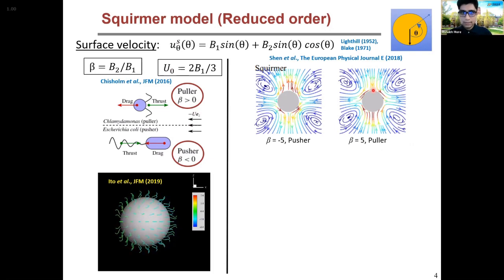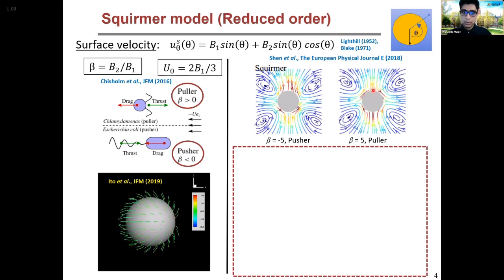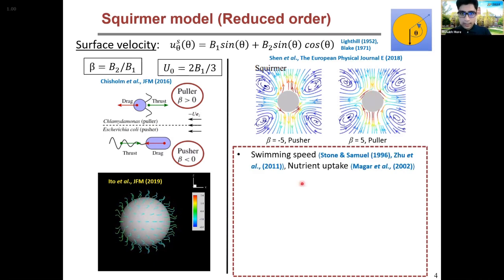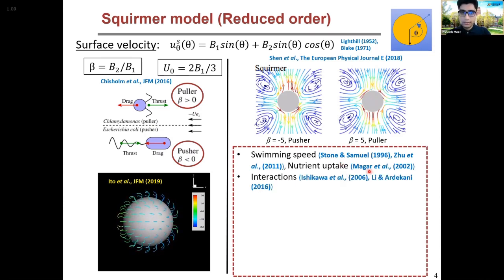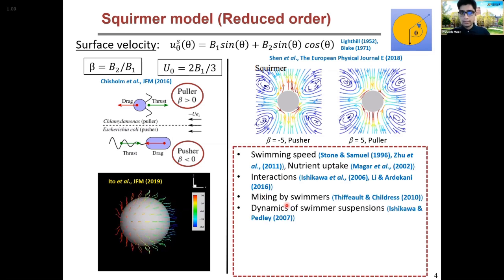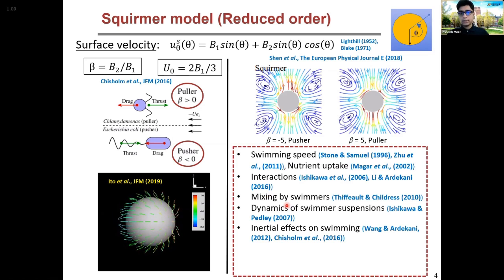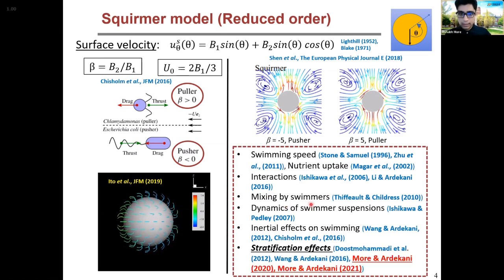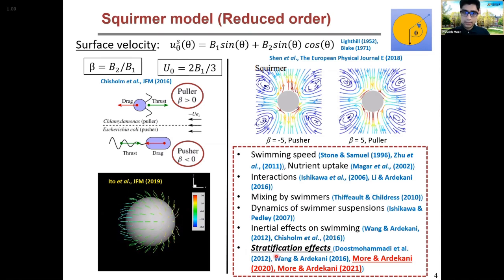This squirmer model has been used extensively to model the motion of organisms and study various phenomena such as swimming speed in Newtonian or non-Newtonian fluids, nutrient uptake by these organisms, interactions between a pair of organisms in a homogeneous fluid at various Reynolds numbers, mixing by swimmers in oceans, dynamics and rheology of swimmer suspensions, inertial effects on swimming, and previously for studying stratification effects. So this work is a continuation of all these studies.